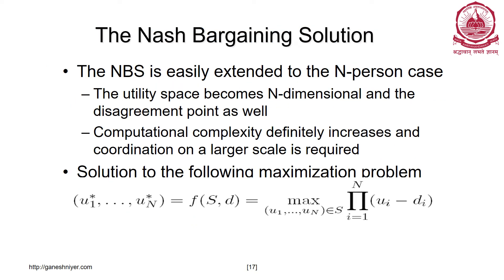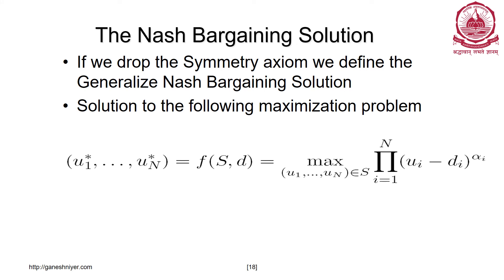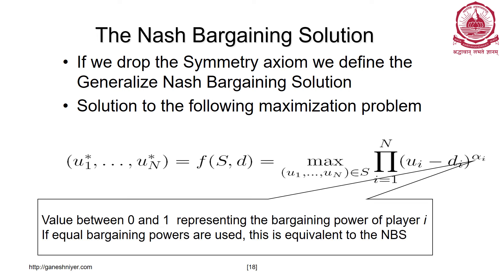The Nash bargaining solution is easily extended to the n-person case: the utility space becomes n-dimensional, and we simply extend the product of (Ui − Di) for all i from 1 to n. If we drop the symmetry axiom, we can define a generalized bargaining solution, which introduces a new term alpha_i — the bargaining power. This is exactly what is used in the rich man/poor man example: the rich man had a higher bargaining power (high alpha) and the poor man had a very low bargaining power close to zero.